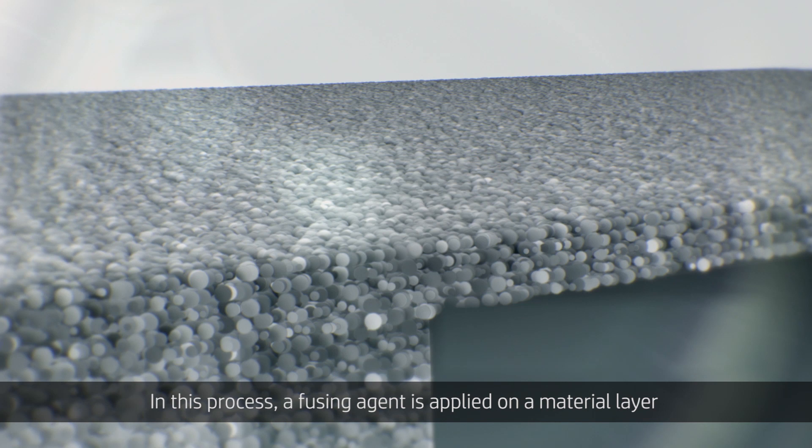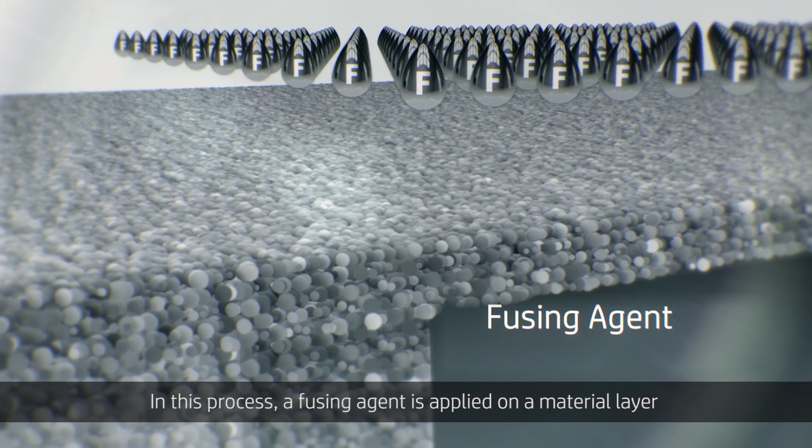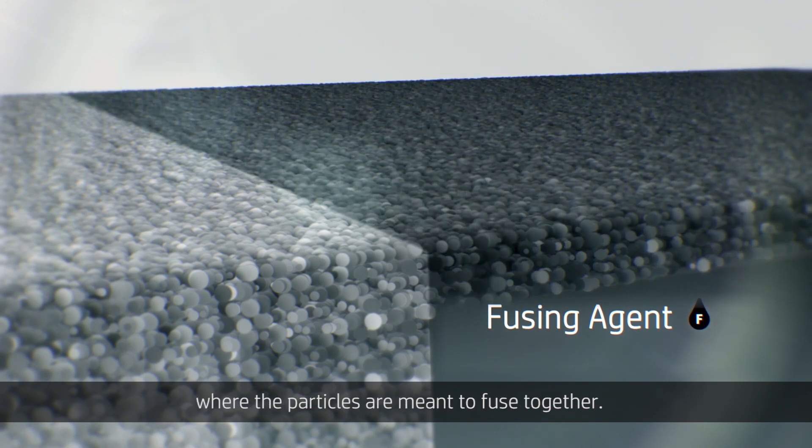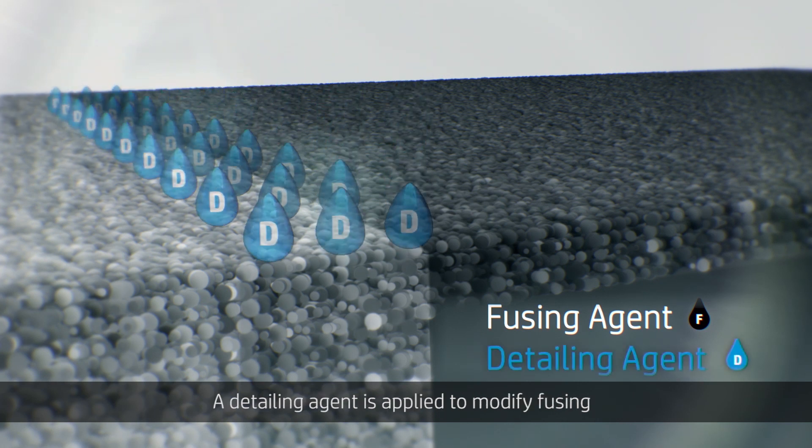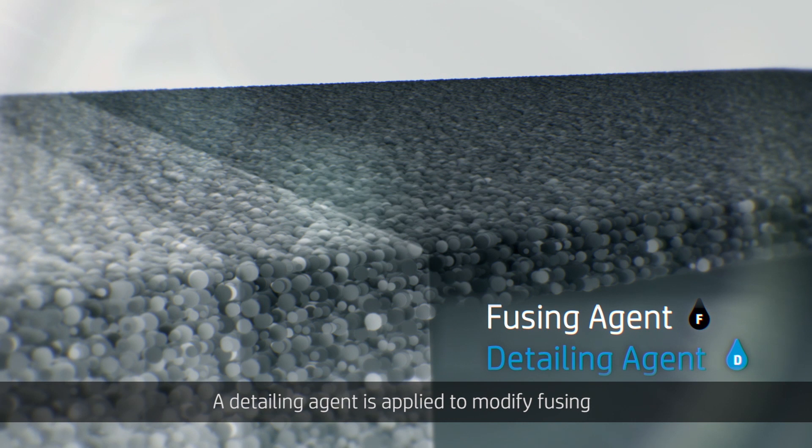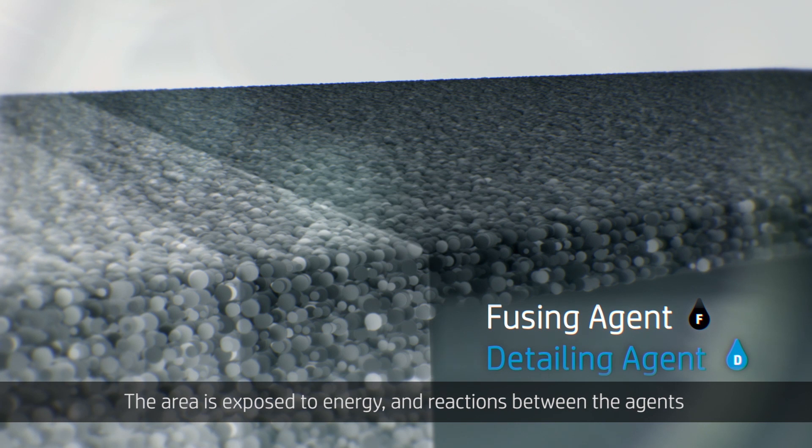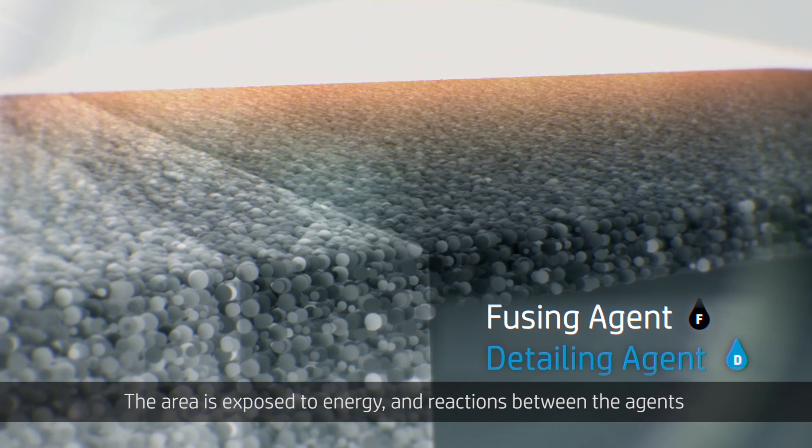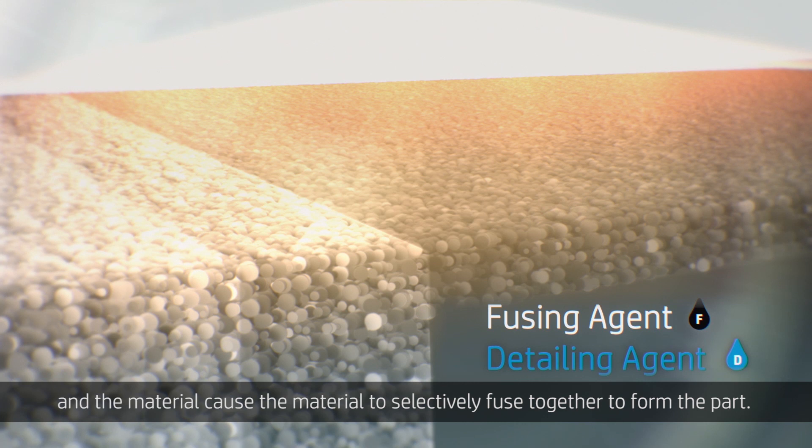In this process, a fusing agent is applied on a material layer where the particles are meant to fuse together. A detailing agent is applied to modify fusing and create fine detail and smooth surfaces. The area is exposed to energy and reactions between the agents and the material cause the material to selectively fuse together to form the part.